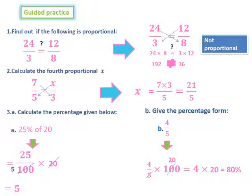Number 2: Calculate the fourth proportional x. We have 7 over 5 is equal to x over 3. We cross multiply the two ratios, x by 5 and 7 by 3. Then, x is equal to 7 times 3 over 5. 7 times 3 is 21 over 5.